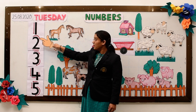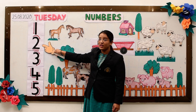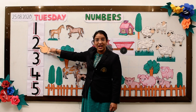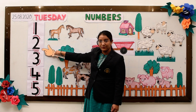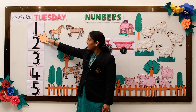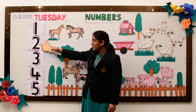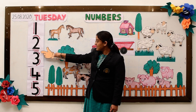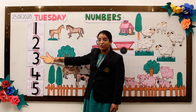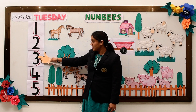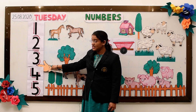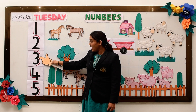Then the number 2. The formation of number 2 is a curve where we drag it down and a sleeping line. The next number is number 3. The formation of number 3 is a curve and again a curve.